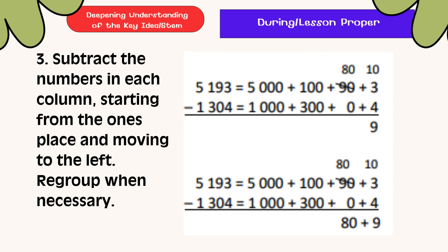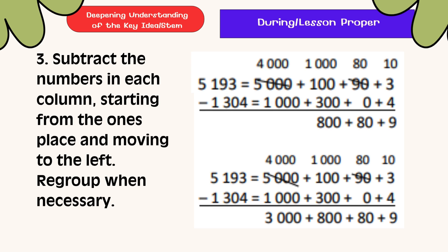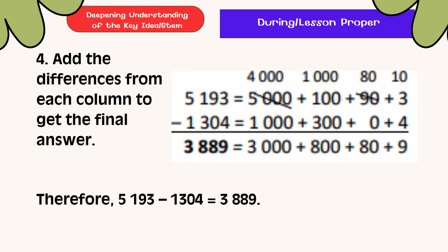Step 3: Subtract the numbers in each column, starting from the ones place and moving to the left. Regroup when needed. We start first from the ones place. Look at the following illustrations to be your guide, followed by the hundreds and thousands place. Step 4: Add the differences from each column to get the final answer. Therefore, 5,193 minus 1,304 is equal to 3,889.